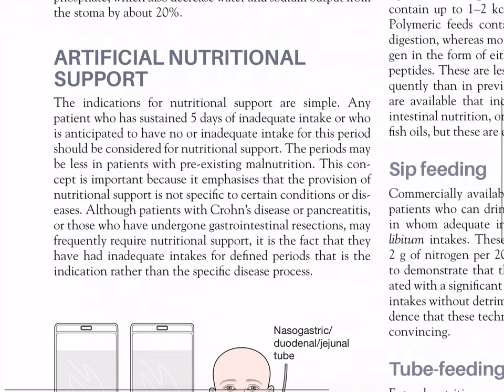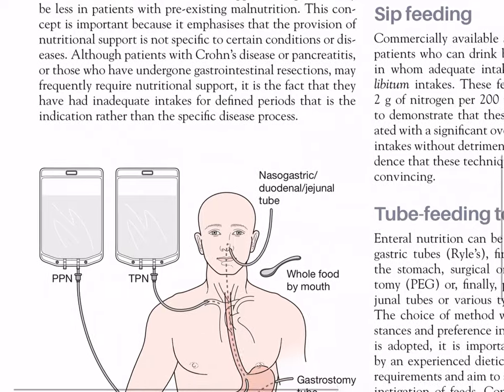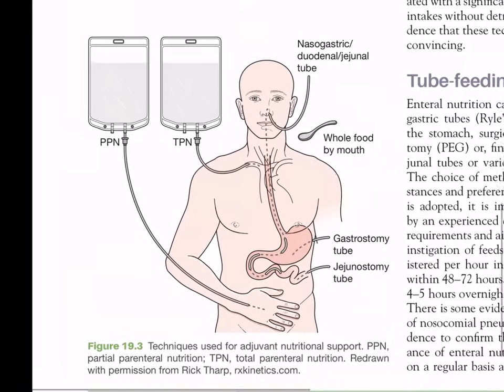Anti-motility drugs include loperamide and codeine phosphate, which decrease water and sodium output from the stoma by about 20%. Artificial nutritional support: the indications are simple — any patient who has sustained five days of inadequate intake, or who is anticipated to have no or inadequate intake for this period, should be considered for nutritional support. The period may be less in patients with pre-existing malnutrition. This concept emphasizes that nutritional support is not specific to certain diseases; it is the fact of inadequate intake for defined periods that is the indication, rather than the specific disease process.